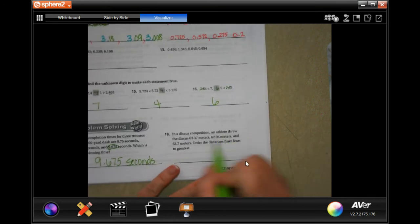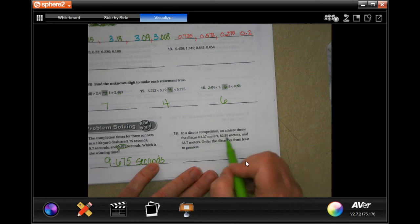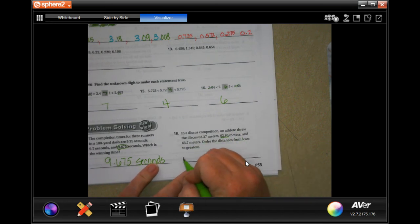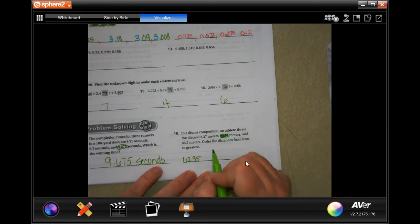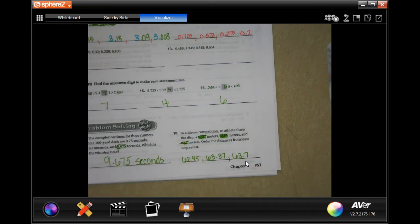A discus competition. An athlete threw discus at 63.37 meters, 62.95 meters, and 63.7 meters. Order the distances from least to greatest. So, from smallest to biggest, guys. Well, that 63, that 63, that 62. That's going to be our first one. 62.95. I'm going to cross it off. I don't want it anymore. Now, 63.3 or 63.7? Well, 63.3 is going to be 6. So, 63.7 is our last one. There you go.